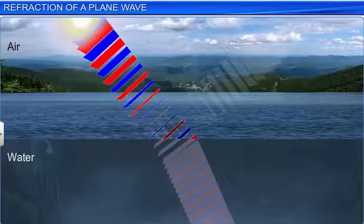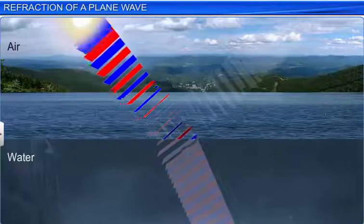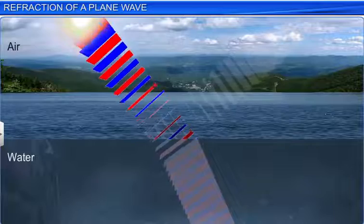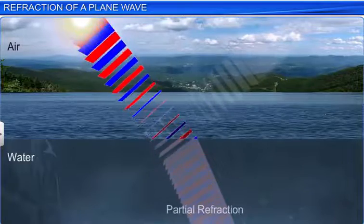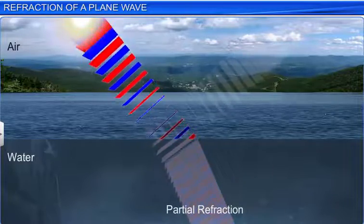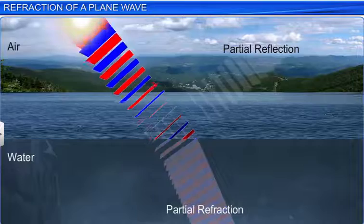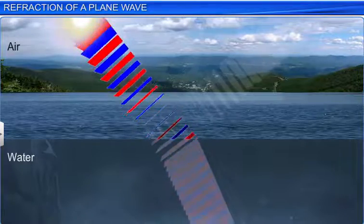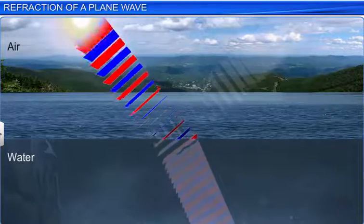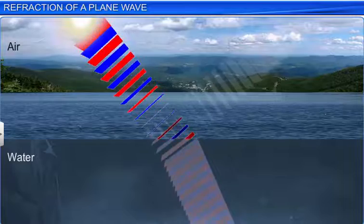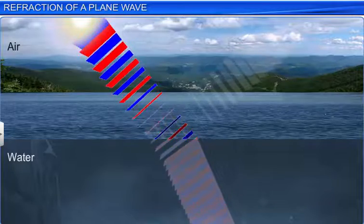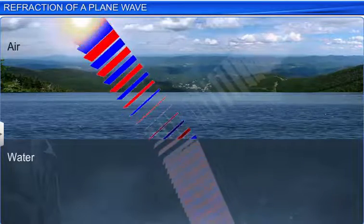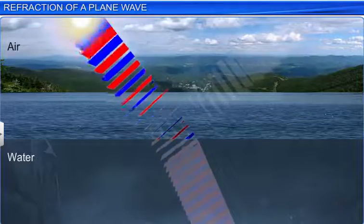When light waves are incident on an interface of two transparent media, light gets partially refracted and partially reflected. Using the Huygens principle, we can derive the laws of refraction and reflection and show that these laws are consistent with the wave nature of light.